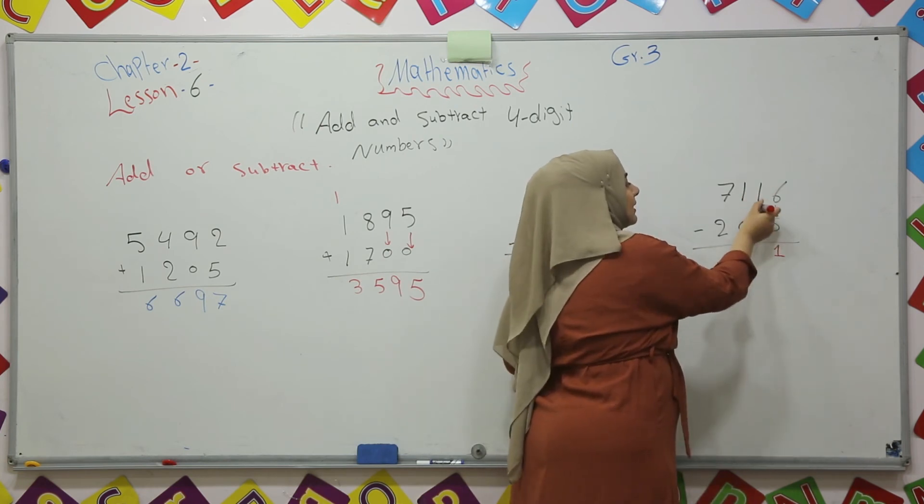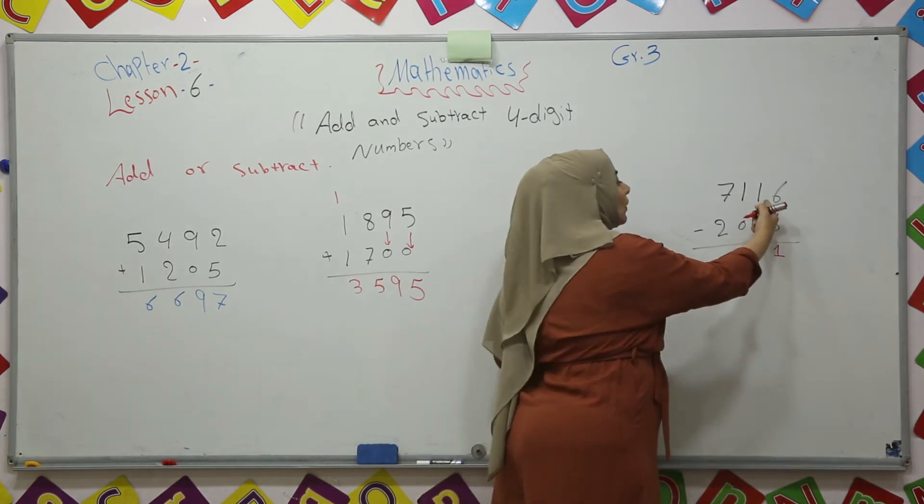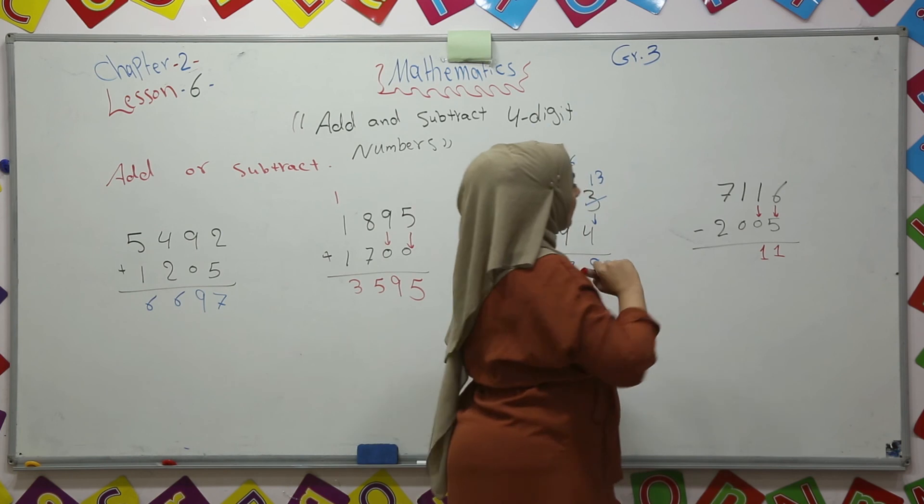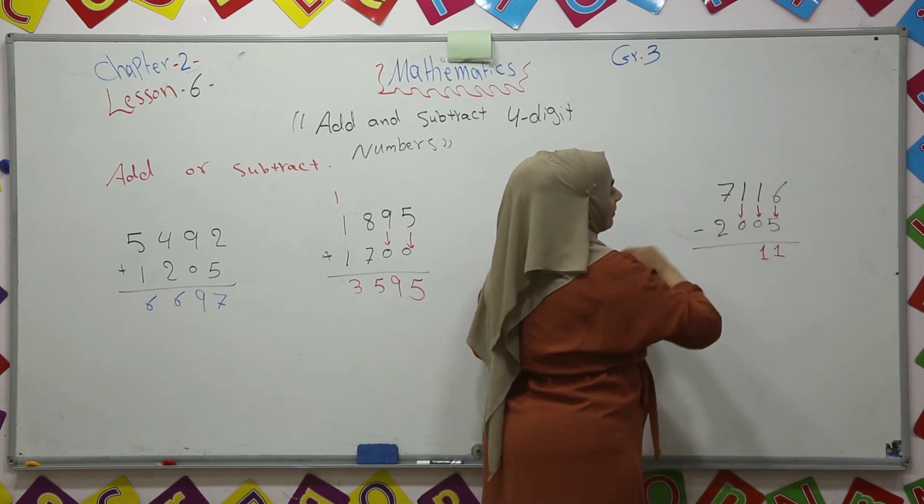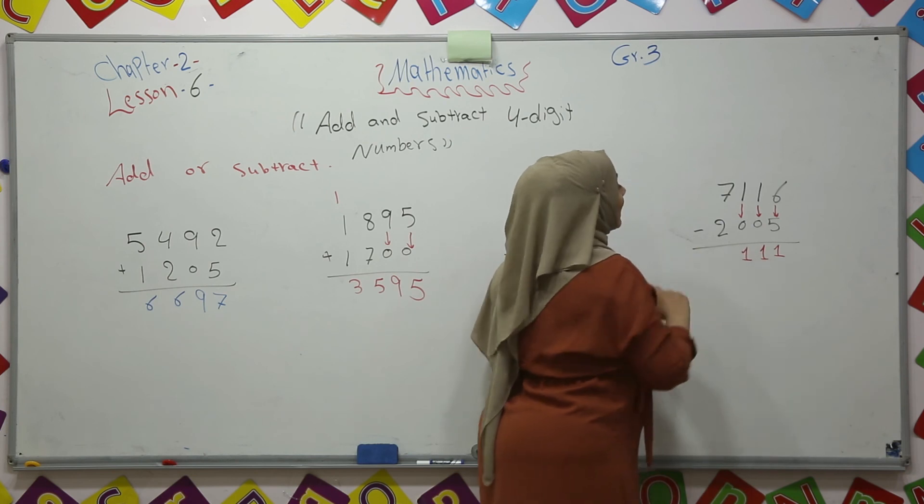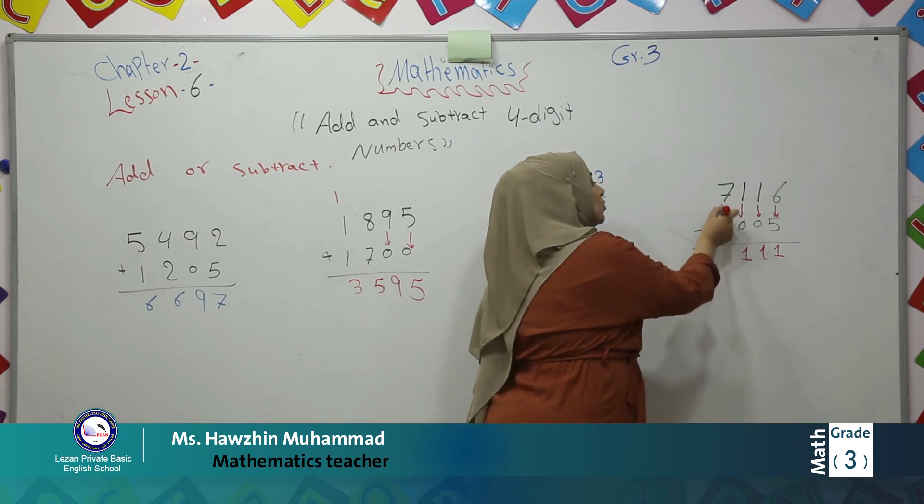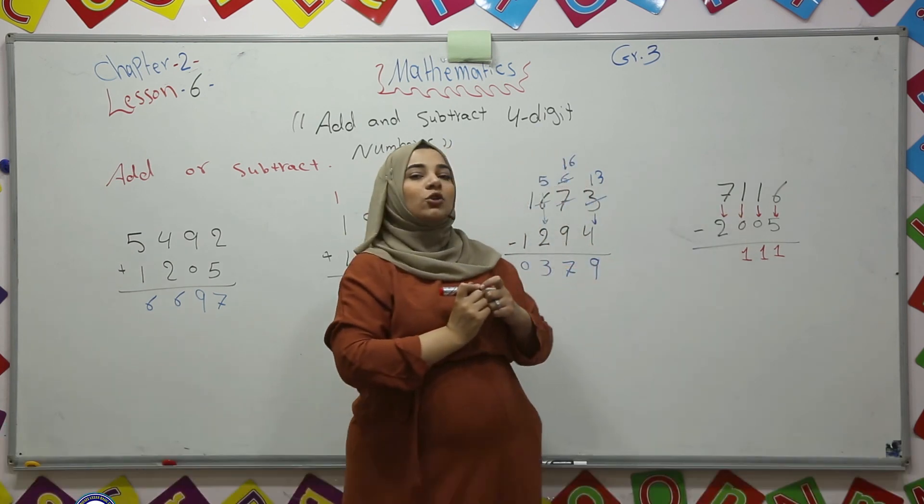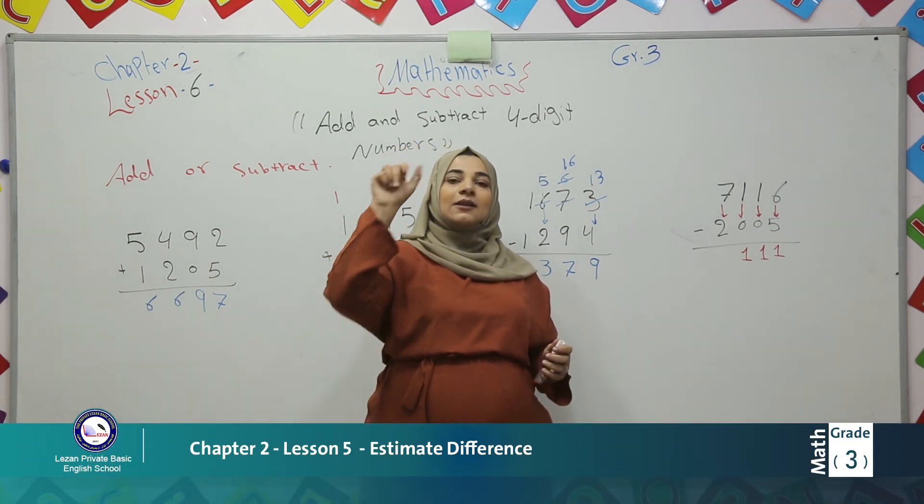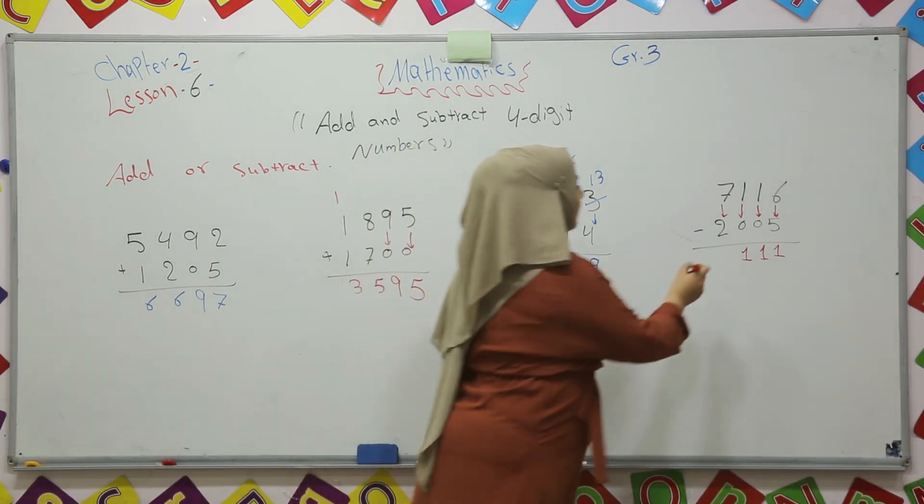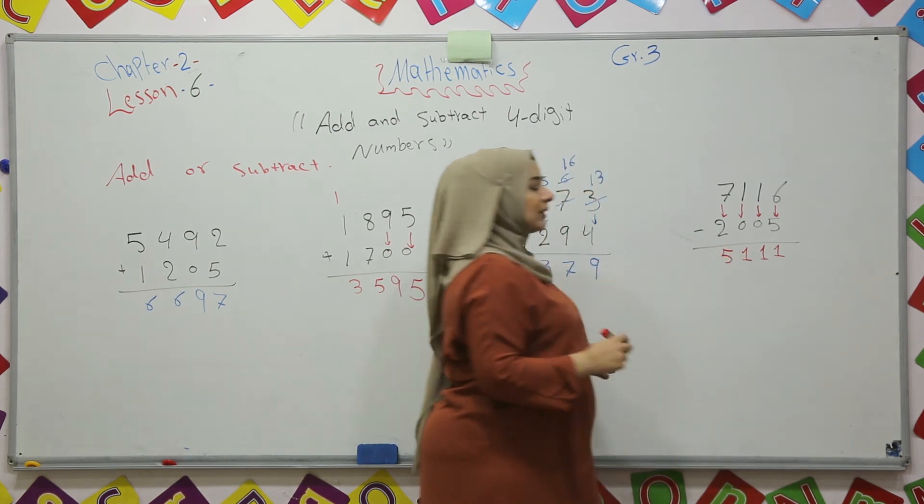One minus zero will stay one. One minus zero again, one minus zero is one. Seven minus two. I will count back two numbers from seven. Seven, six, five. So it is five. So the answer is five thousand one hundred eleven.